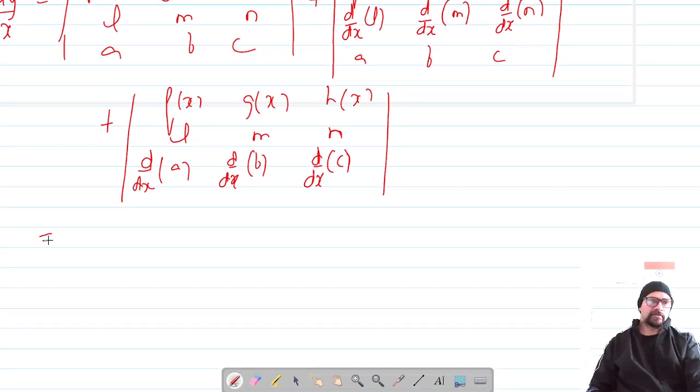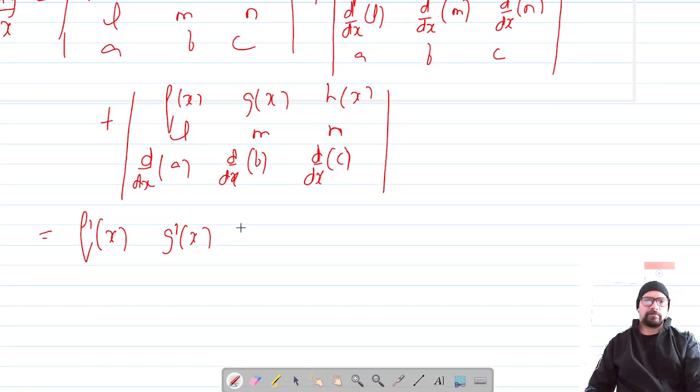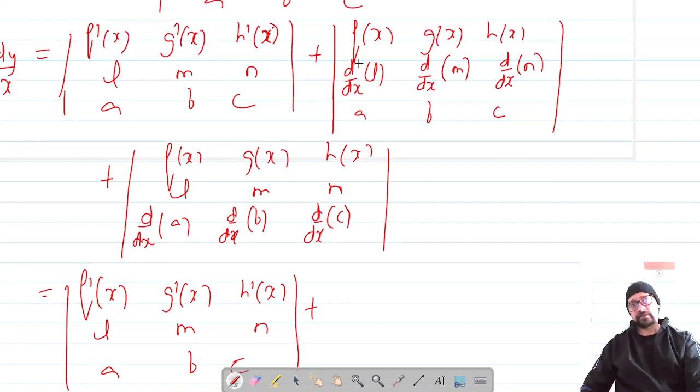Now the first one will remain as it is. These are the differentiation of the functions: f'(x) g'(x) h'(x), and it's l m n and a b c.